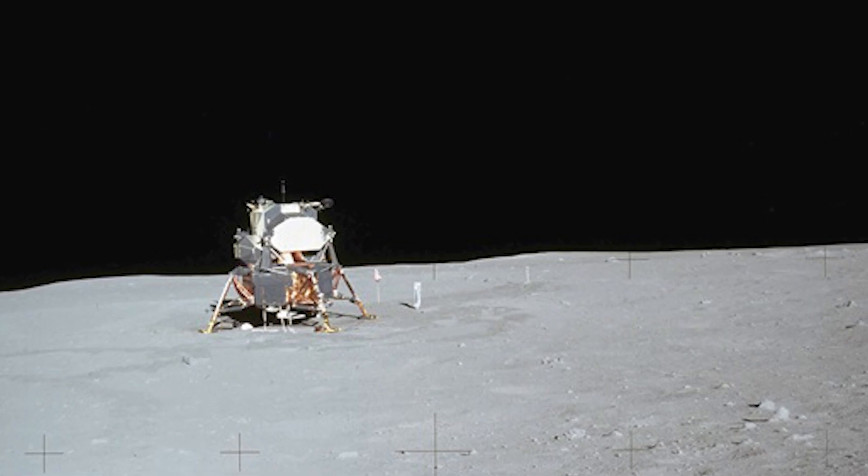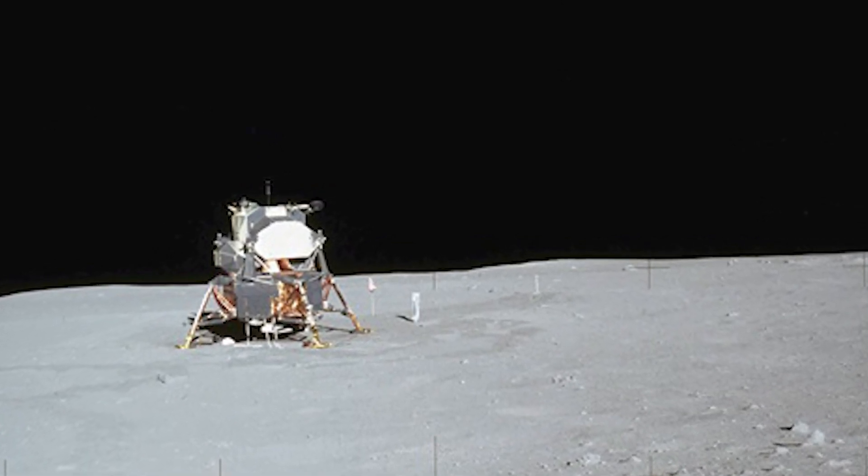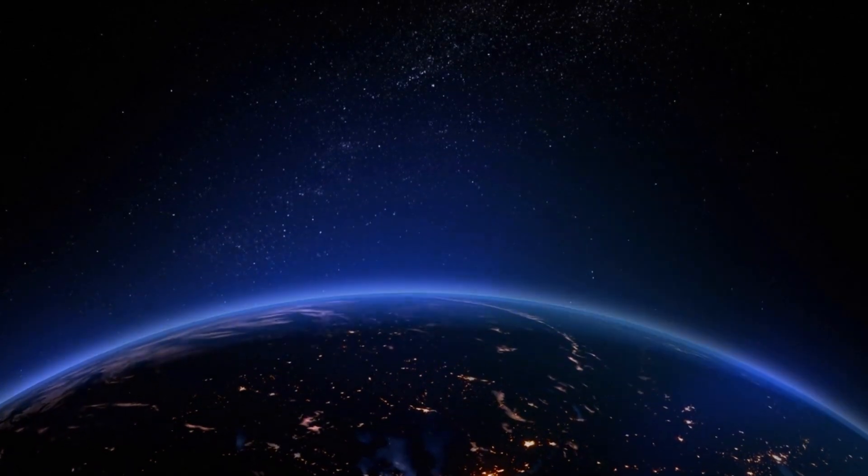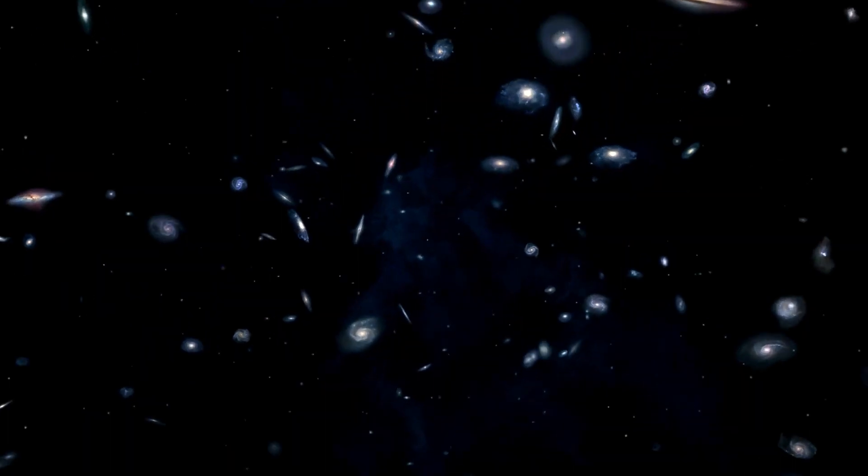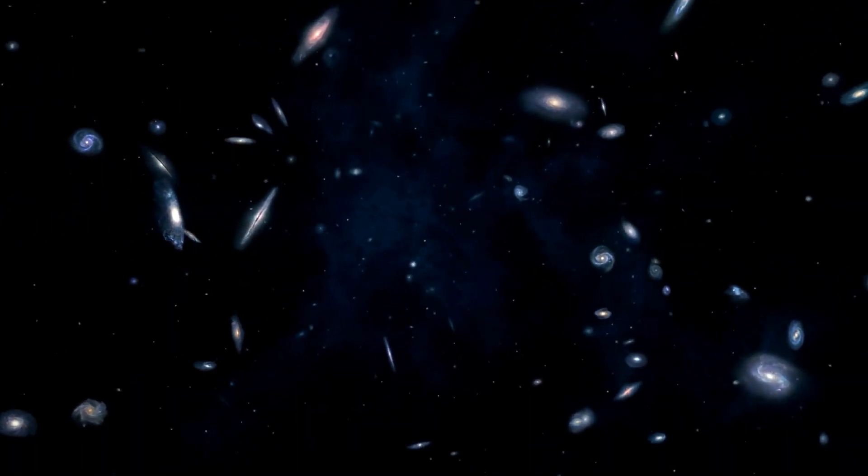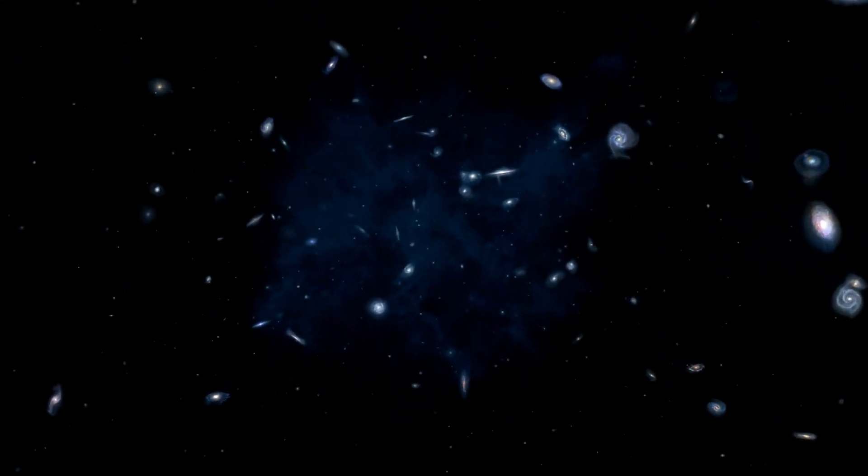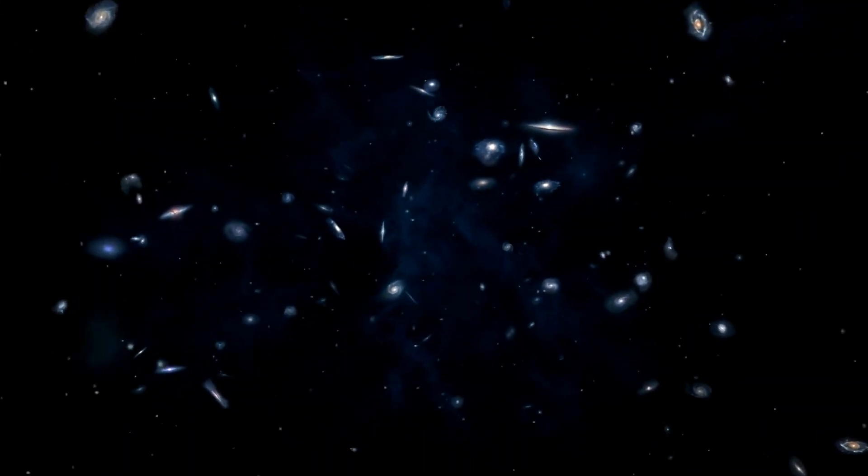This is also why the sky appears black during the day when viewed from space. There's no atmosphere to scatter sunlight and create the blue sky we see from Earth. So, while dark matter plays a crucial role in shaping the large-scale structure of the universe, it doesn't affect the way we see space with our eyes.